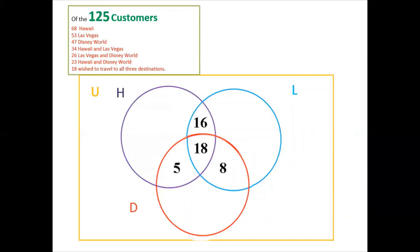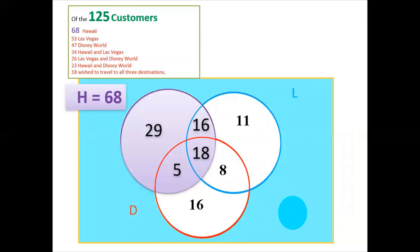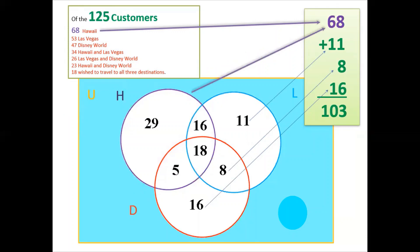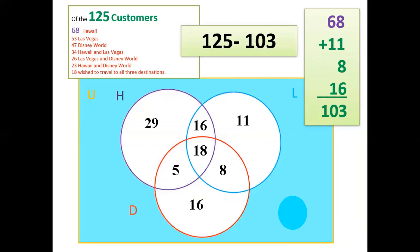Of 125 customers total, all the cardinalities inside this diagram must sum to 125. Adding all the numbers — 29, 11, 16, 18, 5, 8, 16 — gives 103. Then 125 minus 103 equals 22, which is placed outside the three circles.